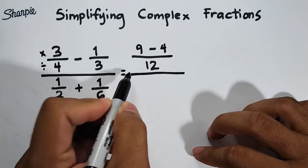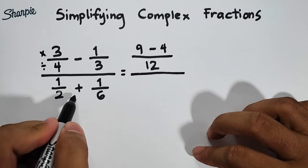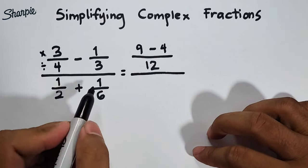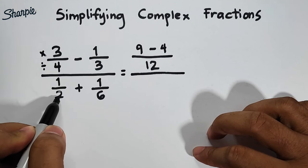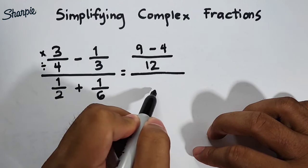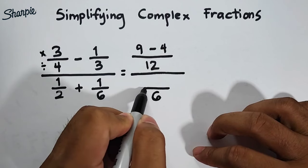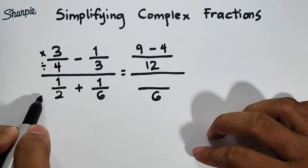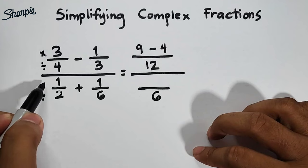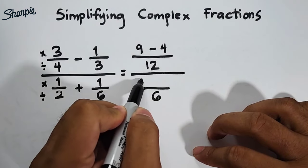So next is your denominator. 1 half plus 1 over 6. So what we need to do is to get the LCD of 2 and 6, which is 6. And then 6 divided by 2 is 3 times 1, that is 3.